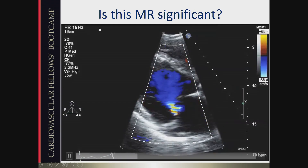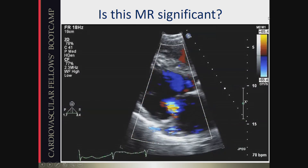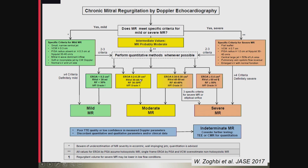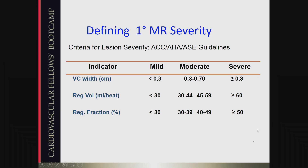We have excellent guidelines to quantify MR — the first version chaired by Dr. Zoghbi was written in 2003, and version 2.0 dropped last year with updates including 3D echo and cardiac MRI. All trainees need to find and read these guidelines; they're bread and butter for the echo lab. There are specific criteria for severe MR, specific criteria for mild MR, and quantitative tools for moderate or indeterminate cases, with recommendations to proceed to TEE or cardiac MRI when needed.